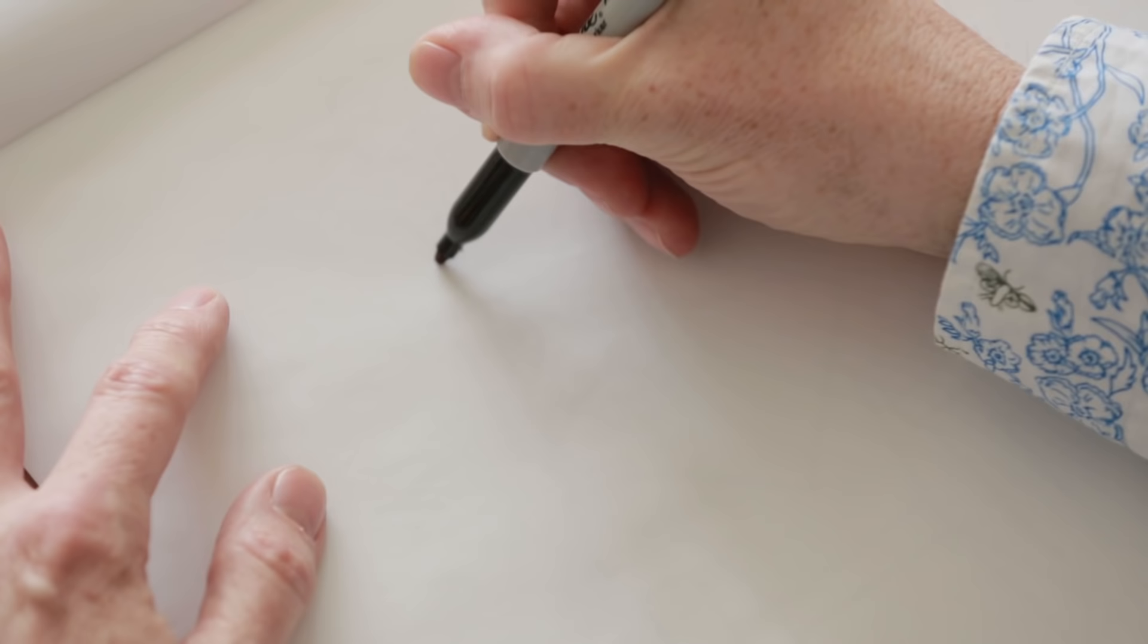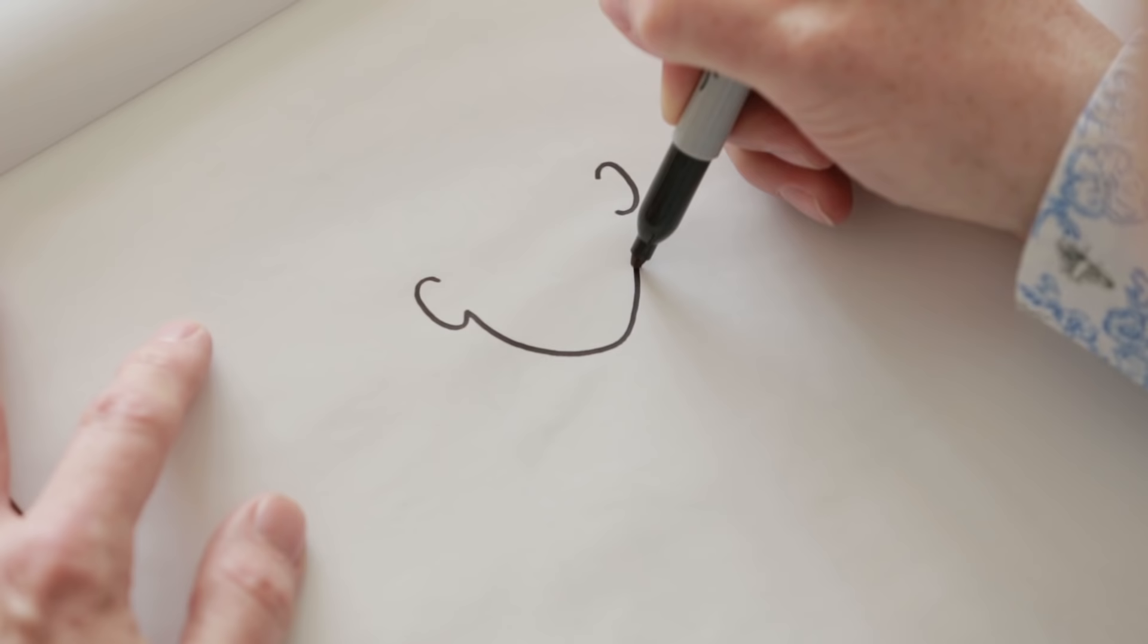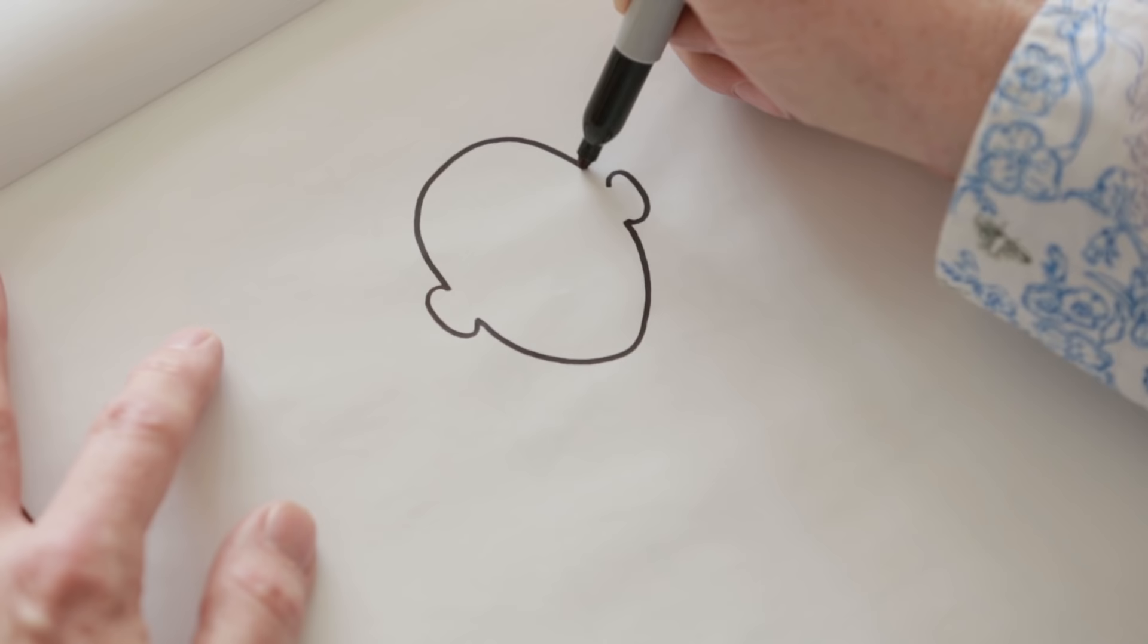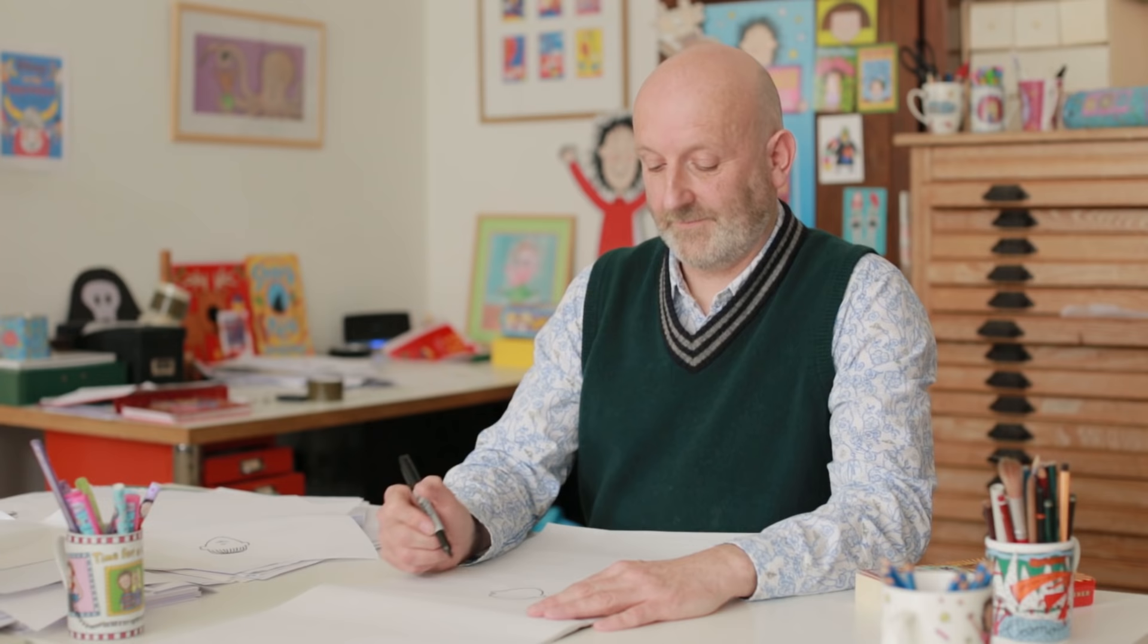I would draw the shape of her head first of all. Once upon a time, I used to start my drawings by doing the eyes and the nose and the mouth straight away. But I think it's much easier if you draw the outline of the head and then you can get those features in exactly the right place. So there's her head. She's got a slightly pointy chin.